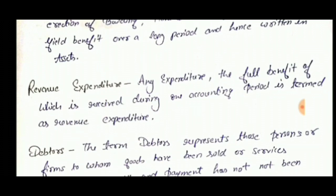Revenue expenditure is any expenditure the full benefit of which is received during one accounting period, or for less than one year. For example, machinery lasts a long time, so that's capital expenditure. But expenses whose benefit we receive only for one year or less are called revenue expenditure.